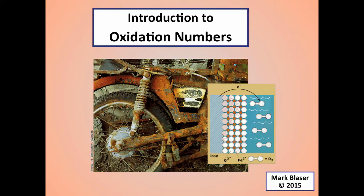Welcome to a screencast that will provide an introduction to oxidation numbers. Let's start by looking at a couple of chemical reactions. This one is between magnesium and oxygen — it makes magnesium oxide.